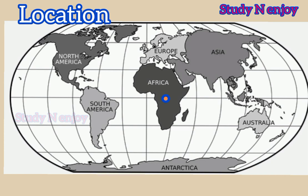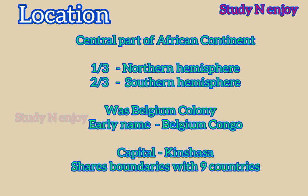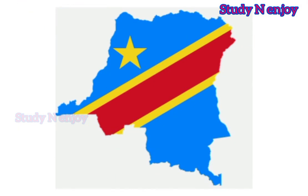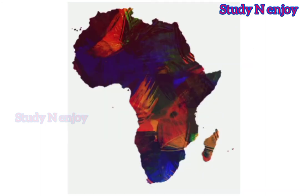The Democratic Republic of Congo, or DRC, is located in the central part of the African continent. One-third of the DRC lies in the Northern Hemisphere, while the other two-thirds lie in the Southern Hemisphere. It was ruled by Belgium until it became independent in 1960, so in early times it was called Belgian Congo. In 1971 its name was changed to Zaire, and in 1997 this name was again changed to the Democratic Republic of Congo, or DRC. Its capital is Kinshasa.